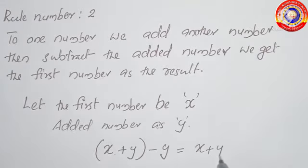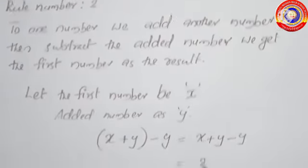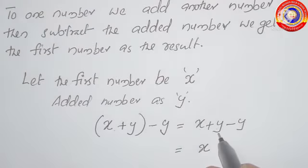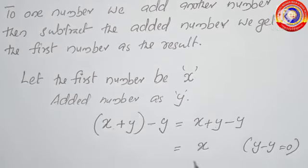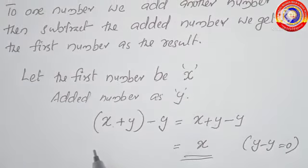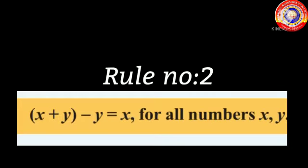x plus y minus y: here y minus y is 0, so the answer is x. So to one number we add another number then subtract the added number, we get the first number as the result. Rule number 2 is: x plus y minus y is equal to x, for all numbers x and y.